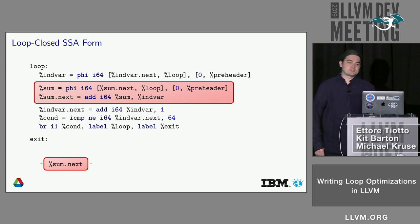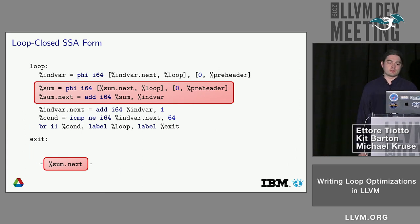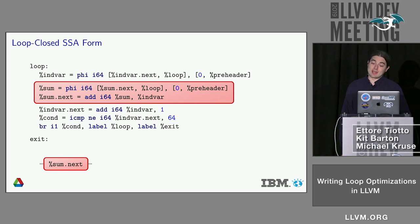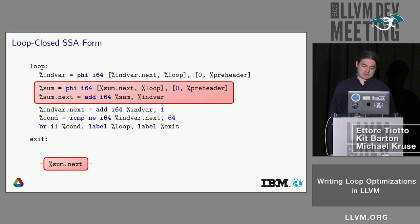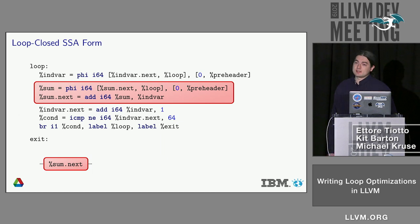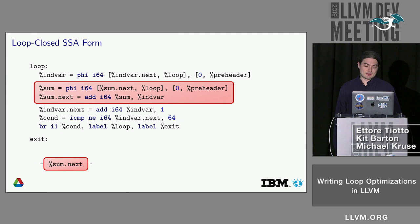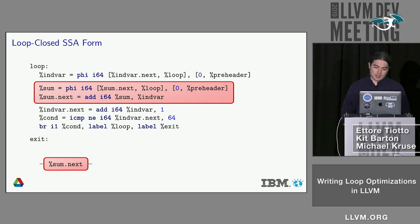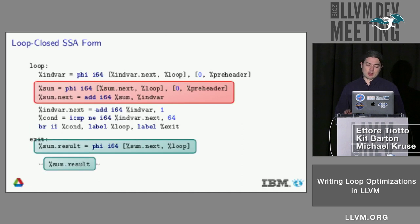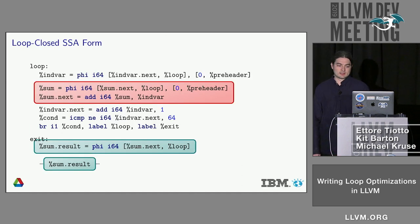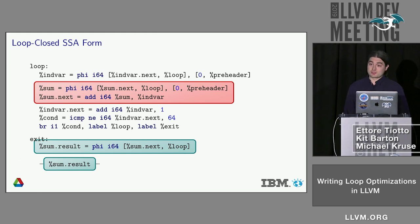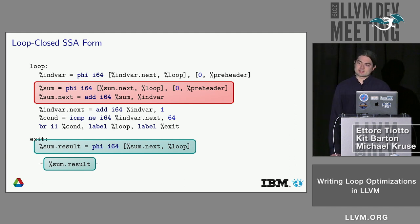Another form of a normalized loop form is the loop closed SSA. Assuming you know what single static assignment is: one case is a use somewhere after the loop for some value — say sum.next — which is perfectly valid since the loop dominates the exit blocks. The loop closed SSA form introduces another instruction in the exit block, a phi with a single entry, which is usually not used on its own but is part of the loop closed SSA form. Every use of sum.next after the loop would be changed to reference sum.result, the phi instruction placed in the exit block.